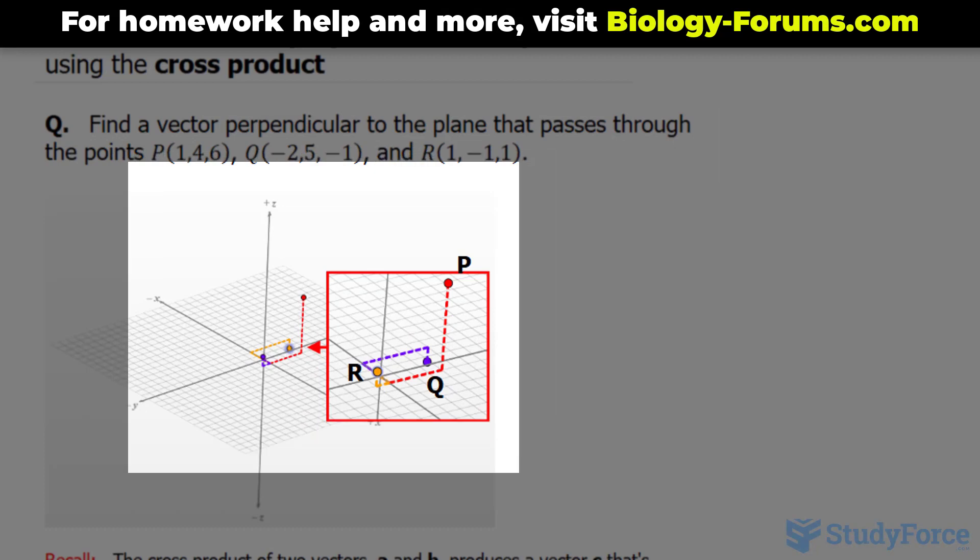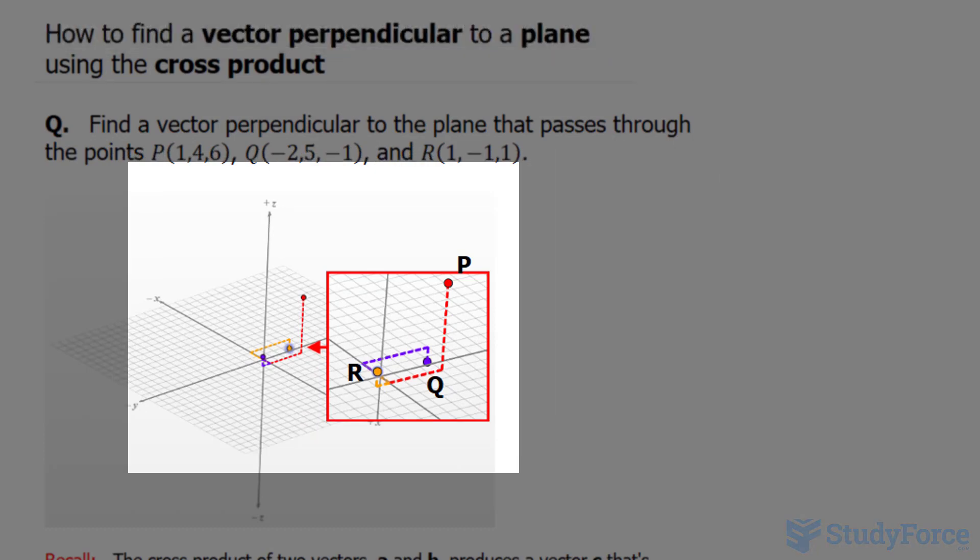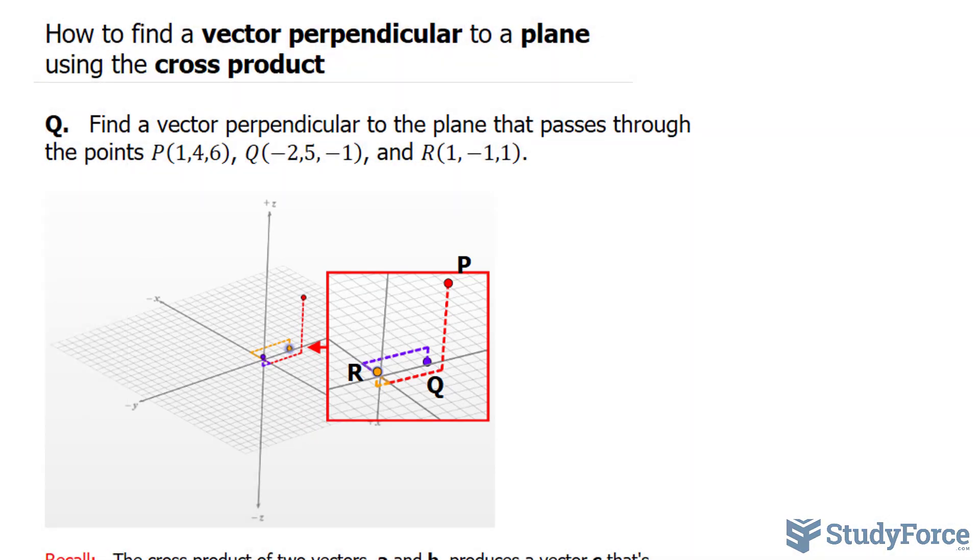Underneath, I've plotted these points, and it's important to notice that P, Q, and R are not vectors, they're points. If we were to extend a line from the origin to each of these points, you would end up with a vector. But the point itself is simply a point in 3D space.